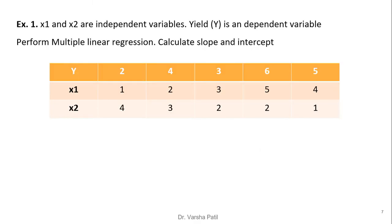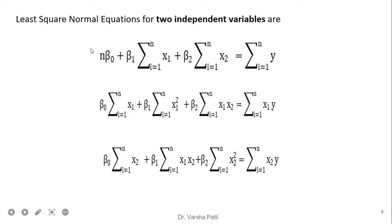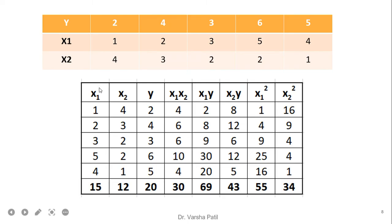Now we will solve the first problem. Let x1 and x2 be 2 independent variables and y be the dependent variable. We perform multiple linear regression to calculate the slope and intercept. We need to calculate: summation of x1, summation of x2, summation of y, summation of x1·y, x2·y, x1·x2, x1², and x2². A table is prepared with the input variables x1, x2, and y, and these derived columns are computed.